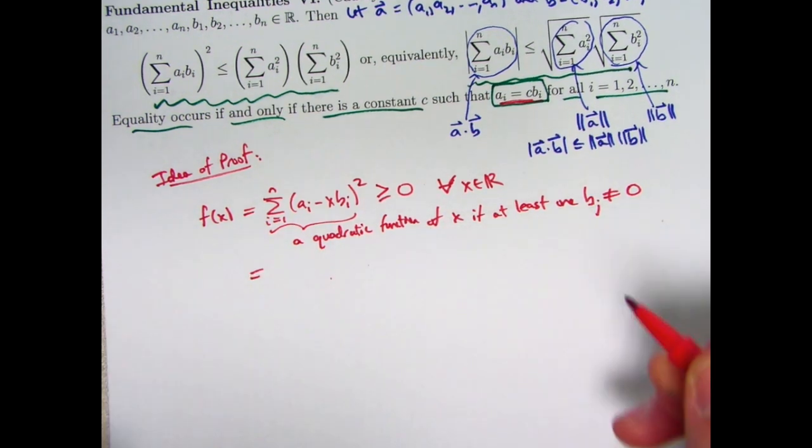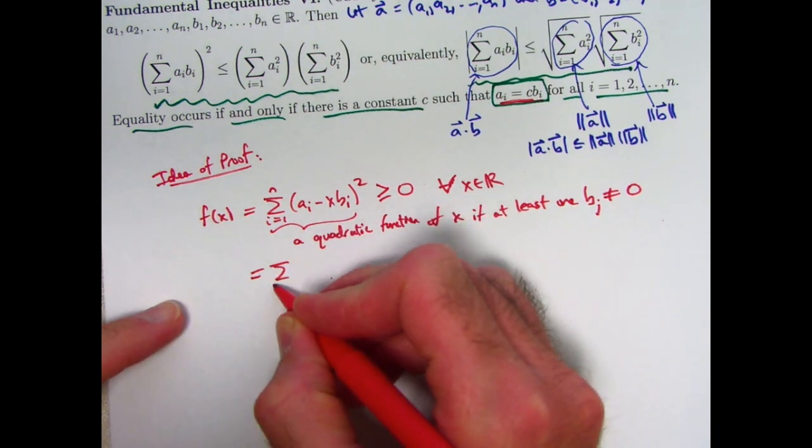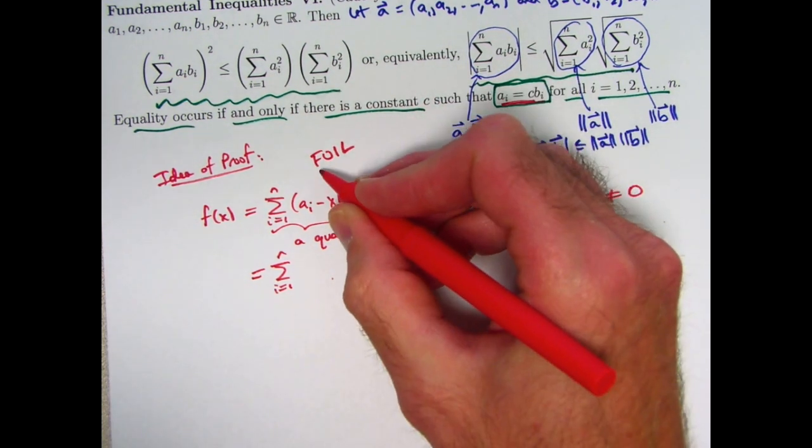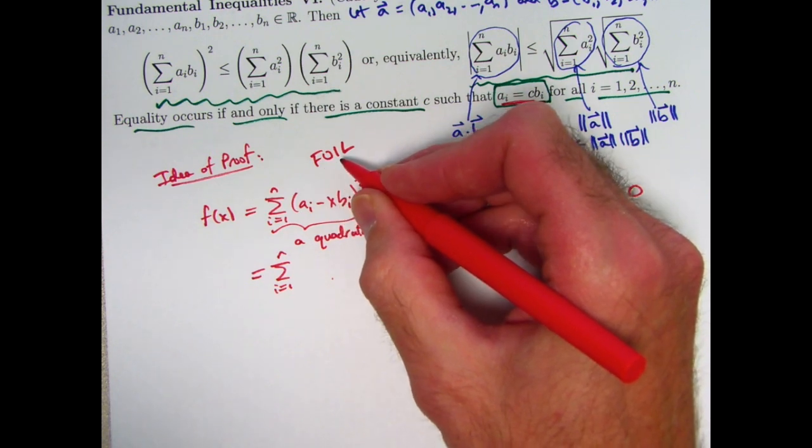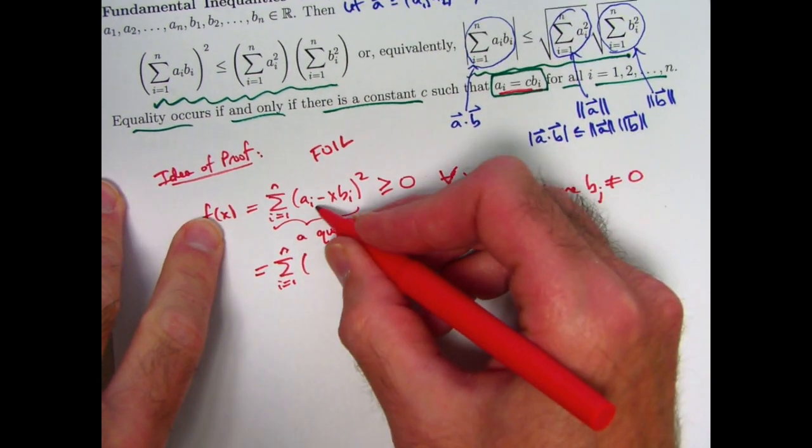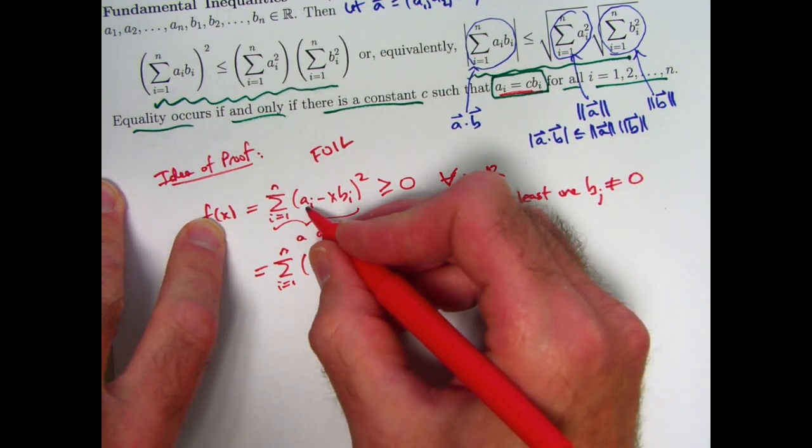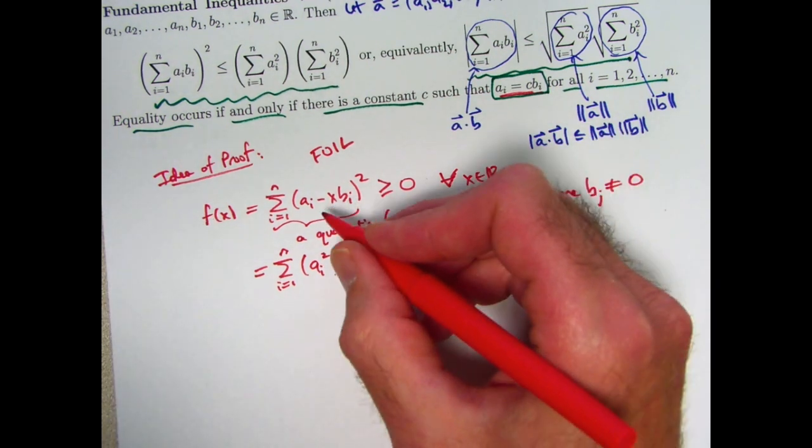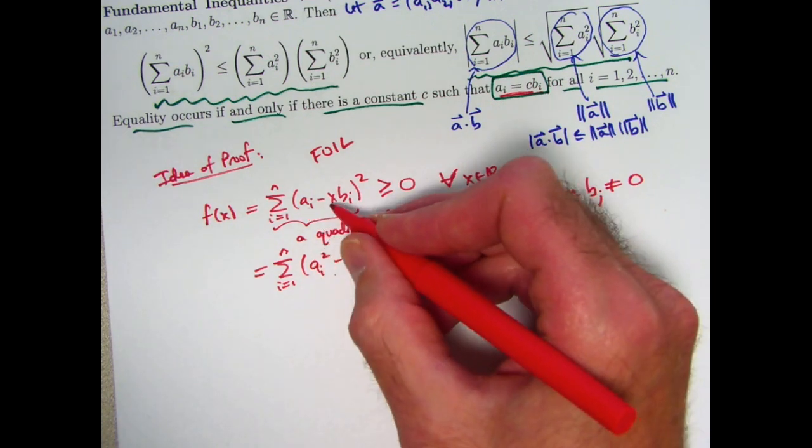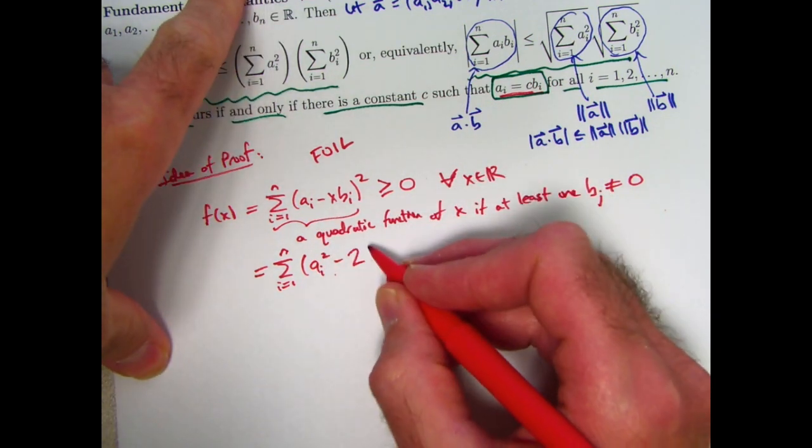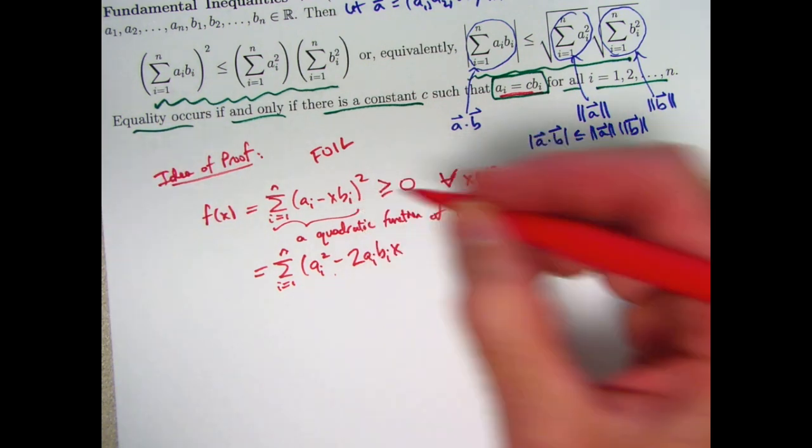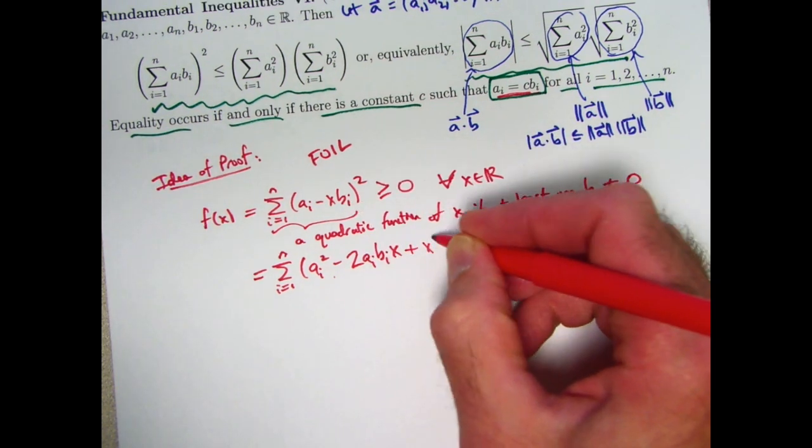So you might want to know what the coefficients of that quadratic are. You can go ahead and expand out this square. You can use FOIL—F-O-I-L, first times first, outside times outside, inside times inside, last times last—when you think of this as being multiplied by itself. First times first is aᵢ times aᵢ, it's aᵢ squared. Outside times outside and inside times inside both give you negative aᵢbᵢ times x, so we'd have two of those: negative 2aᵢbᵢx. And then last times last is negative xbᵢ times itself, you have to square that, we get plus x²bᵢ².